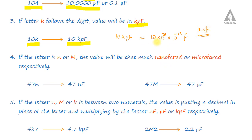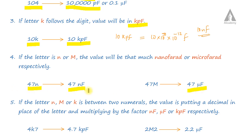If the letter N or M follows the digit, the value will be that much nanofarad or microfarad respectively. So 47N means 47 nanofarad, and 47M means 47 microfarad. K means kilopicofarad.